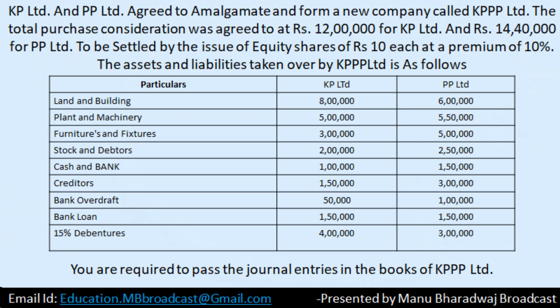KP Limited and PP Limited agreed to amalgamate and form a new company called KPPP Limited. KP Limited and PP Limited are the transferor companies, and they are getting amalgamated into KPPP Limited. The total purchase consideration was agreed at rupees 12 lakh for KP Limited and 14 lakh for PP Limited. They have only given the purchase consideration, so no need to calculate it.